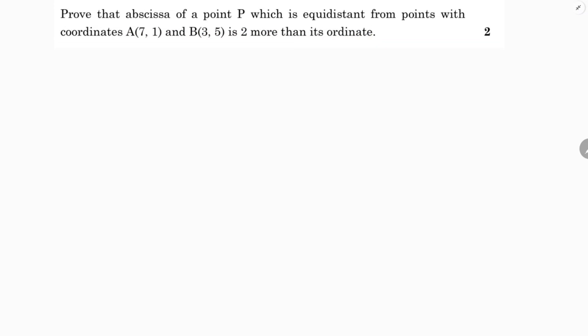Prove that the abscissa of a point P which is equidistant from points with coordinates A(7,1) and B(3,5) is 2 more than its ordinate. So if I take the point P as x comma y, I need to prove that the abscissa — which is nothing but the x value — is 2 more than its ordinate, meaning x equals y plus 2. This is what I have to prove.